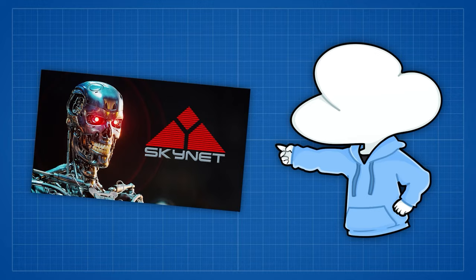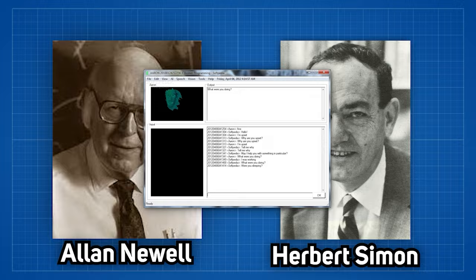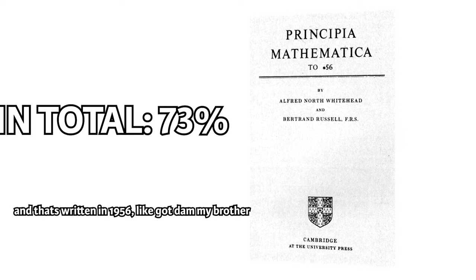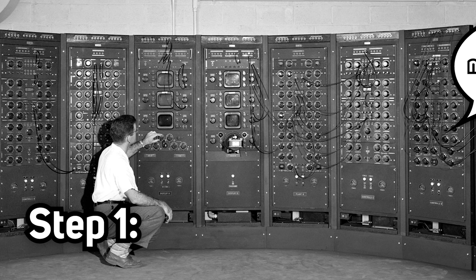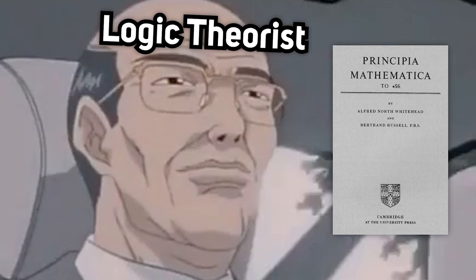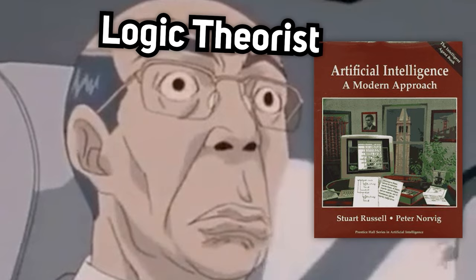In the Dartmouth conference, Newell and Simon introduced the first artificial intelligence program, called the logic theorist. It was the first program to perform automated reasoning. And at its peak, it was able to prove 38 of the first 52 theorems from the Principia Mathematica. Logical theorist was the first step where they hoped to create a machine that could think. Although the program fell short because of its inflexibility, the attempt brought up very important concepts and problems that the AI field will soon face.